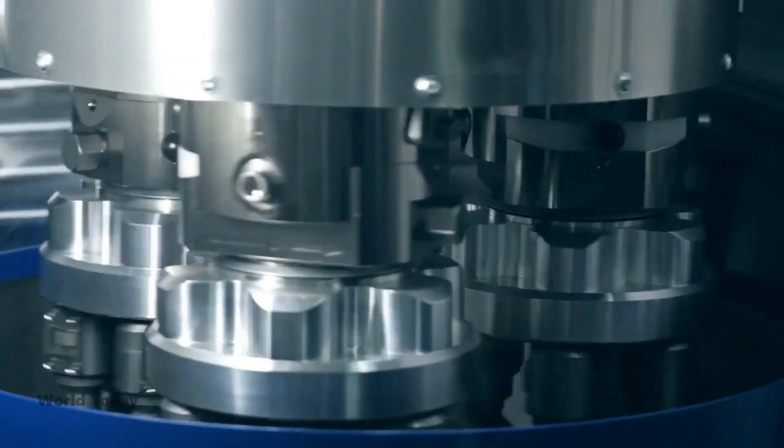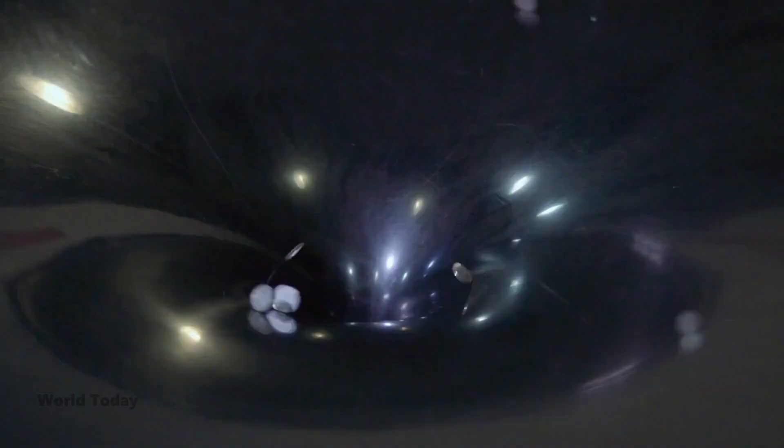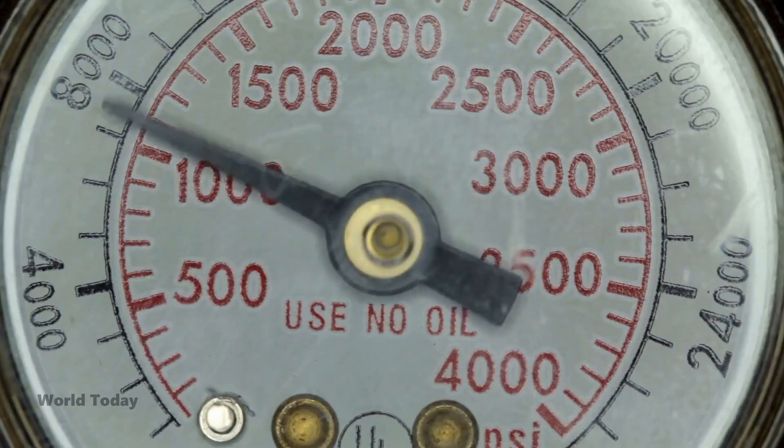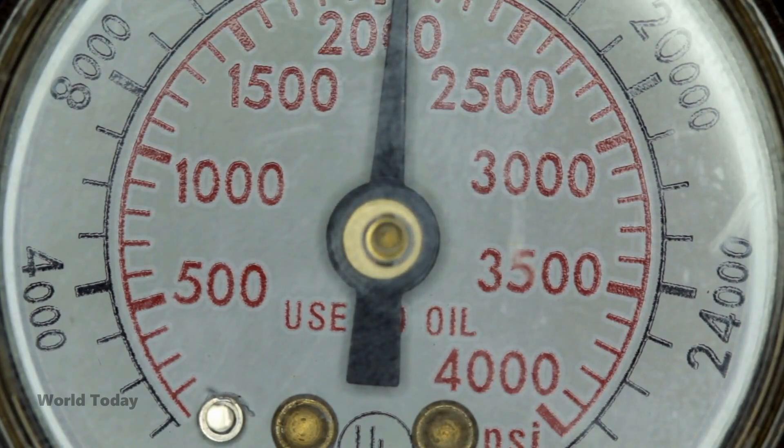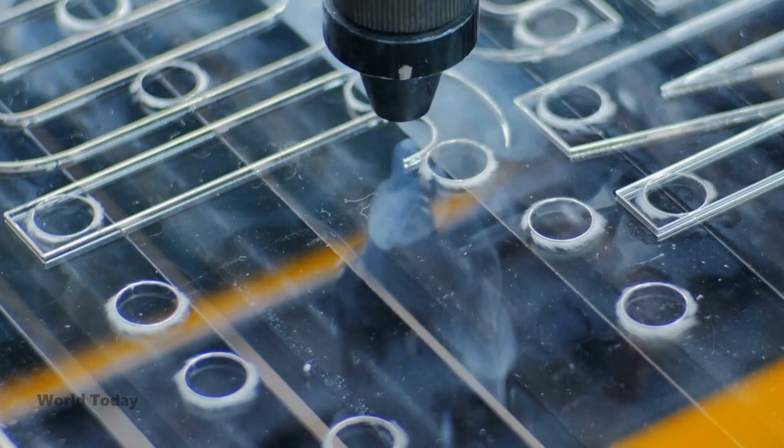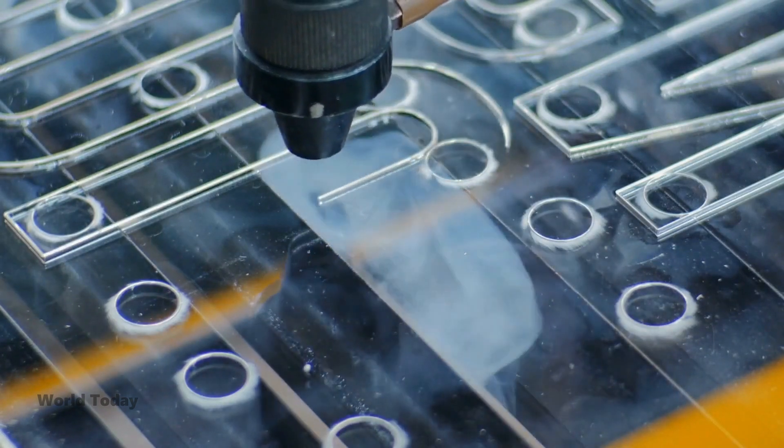The next step in the research will try to reduce the high pressure needed by tuning the chemical composition of the sample. If they can get the mix right, the researchers believe a room temperature ambient pressure superconductor will finally be within our grasp.